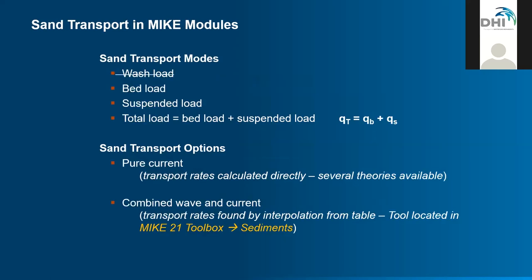One thing to mention is that in all these calculations, the non-cohesive bed sediment — the sand — is characterized through three parameters: sediment density, median grain size D50, and a parameter called grading coefficient, which measures how wide or narrow the distribution of grain sizes in the granulometric curve is. That's all you need to characterize bed sediment.